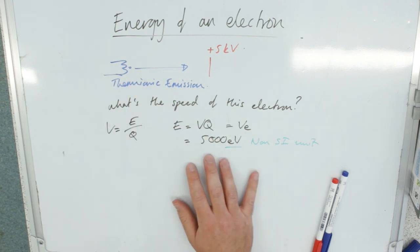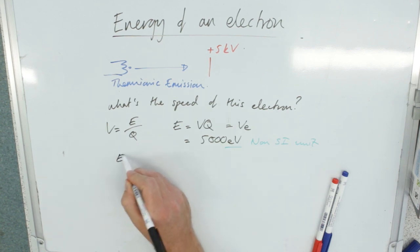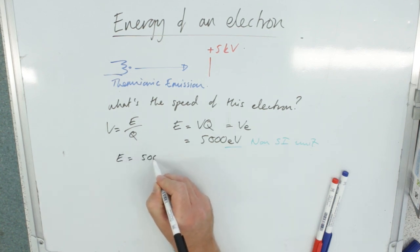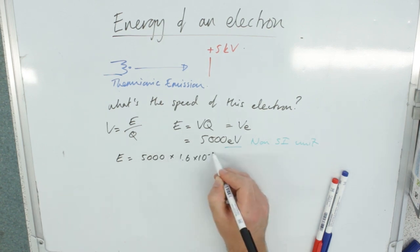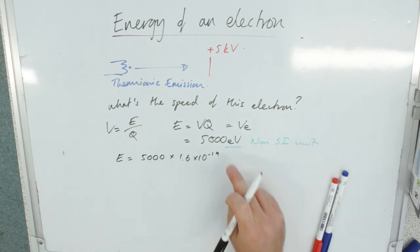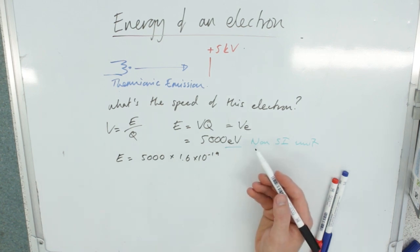If we want to work with that to work out the speed, though, we need to convert that into SI. And whenever you're converting non-SI into SI, follow the unit like it's a formula. So our energy in joules is going to be 5,000 times by 1.6 times 10 to the minus 19 coulombs, which is the charge on an electron. And you could say times a volt, but we don't need to times it by 1.